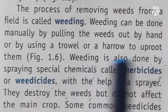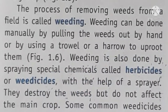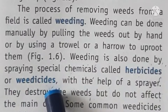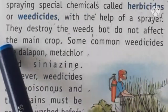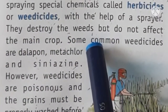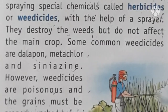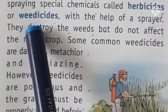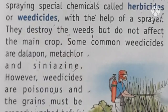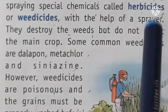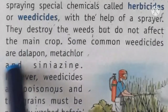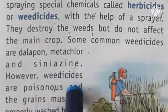The easiest way to do weeding is to spray special chemicals called herbicides or weedicides with the help of a sprayer. These destroy weeds without affecting the main crop. The most common weedicides used are Delafin, Metachlor, and Cinesin.